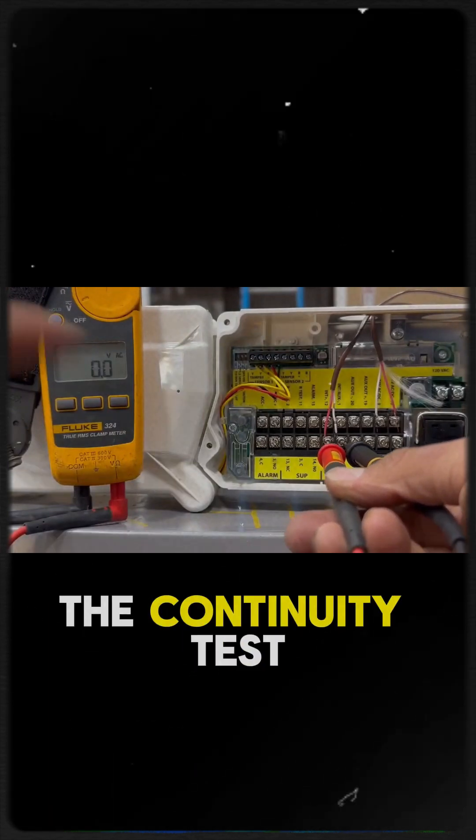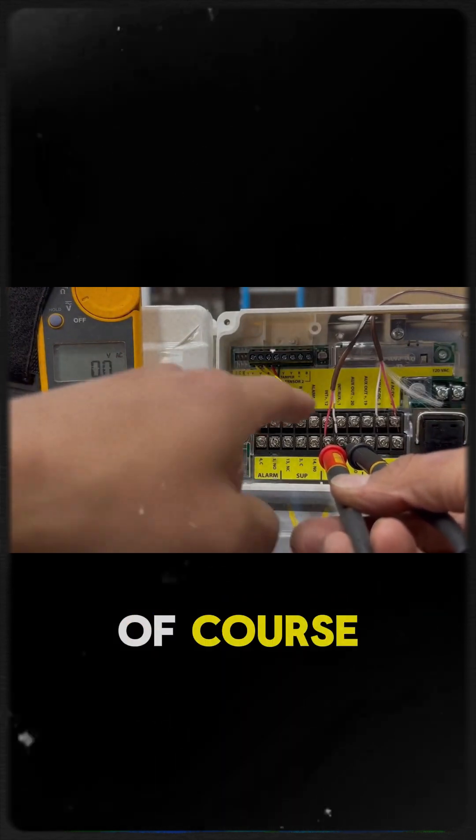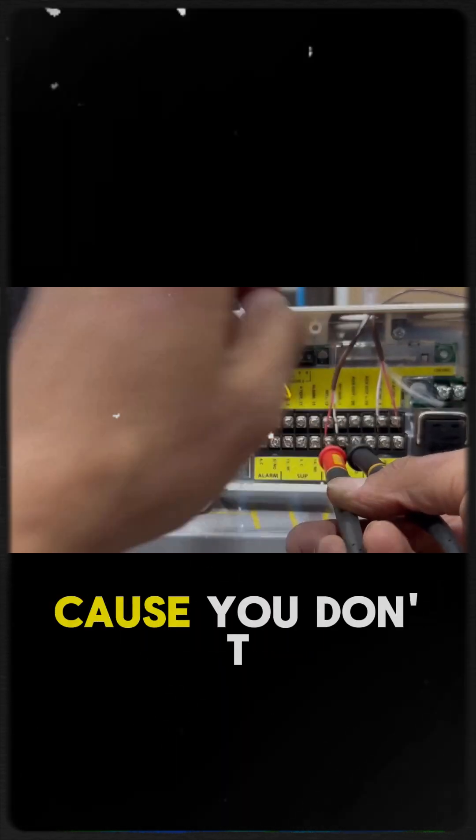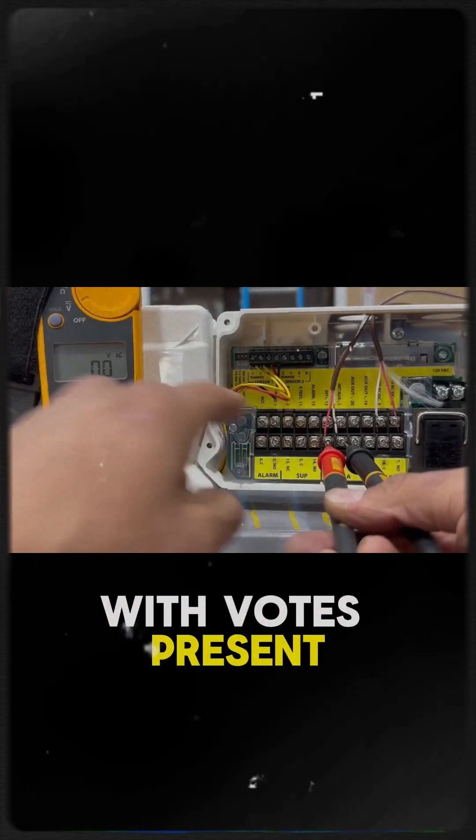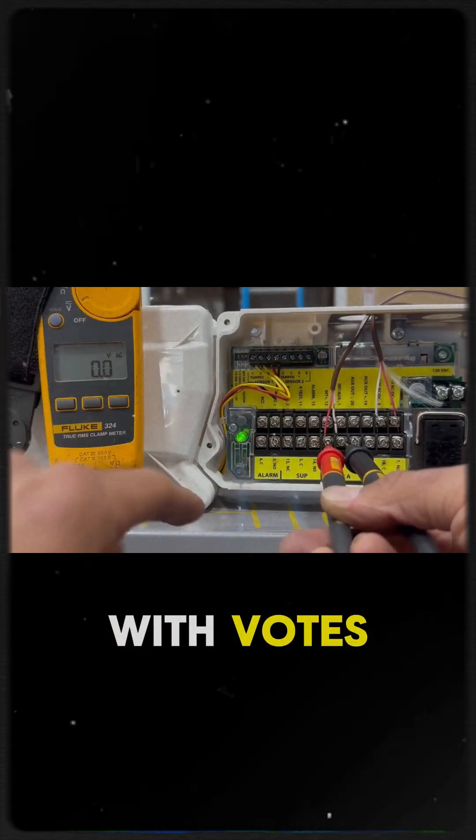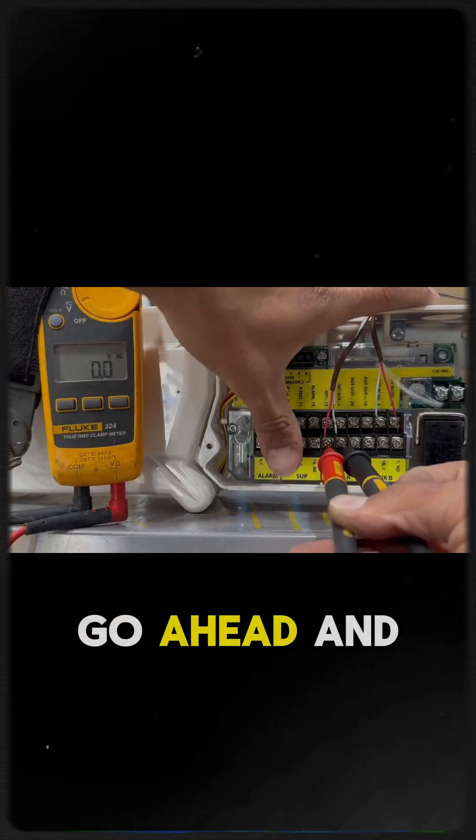Besides doing the continuity test, of course without the wires pressing because you don't want to check continuity with volts present. But if you were to do it with volts, go ahead and trip it.